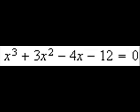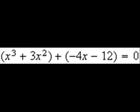What we need to do is group the first two terms together and group the second two terms together like so. Then factor out the common factor in each group, x squared in the first group, negative 4 in the second group.